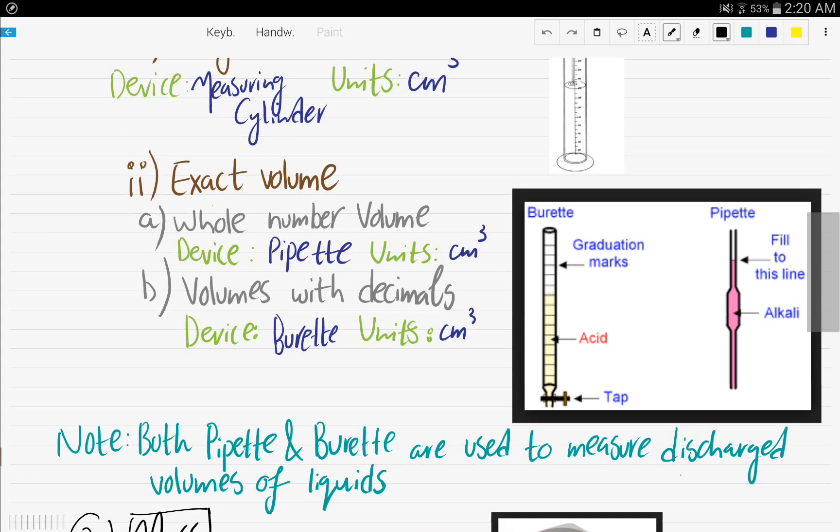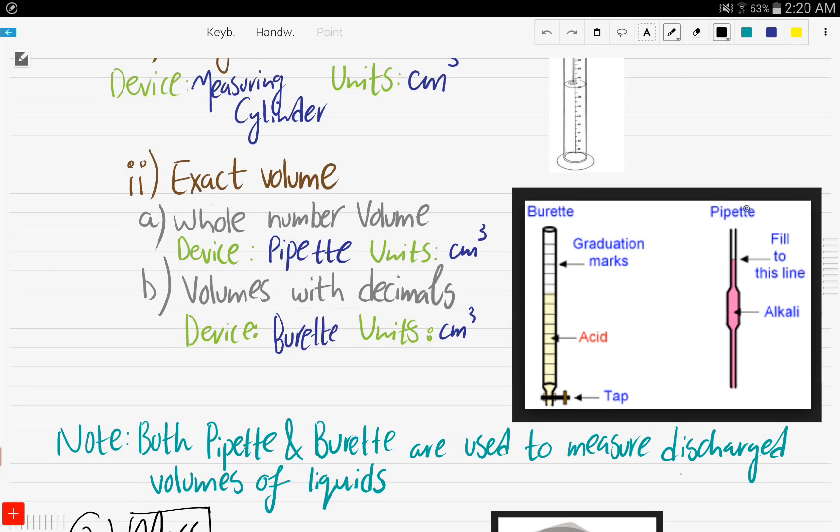I think to bear in mind is that both the burette and the pipette are used to measure discharged volumes of liquids. Which means, if you put here a 50 centimeter cube of water, and then you open the tap and allow the water to flow, and then you stop it at a certain point, the reading here that you will take is that of the liquid that was discharged.